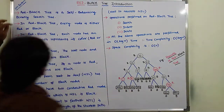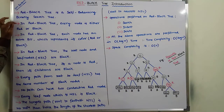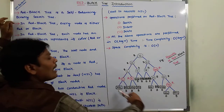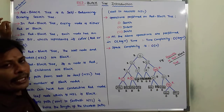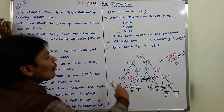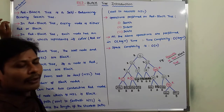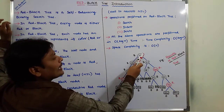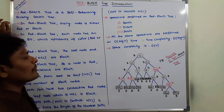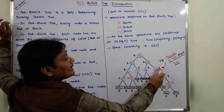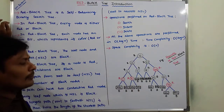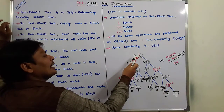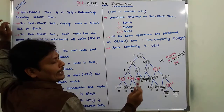Second point: in a red-black tree, every node is either red or black. This is an example of a red-black tree. Here, every node is either black or red. A black node can be denoted by B, and a red node can be denoted by R.